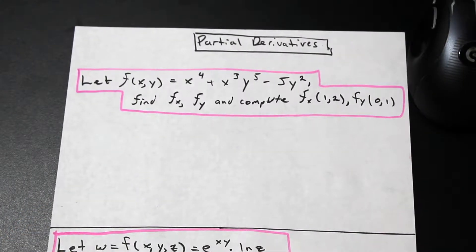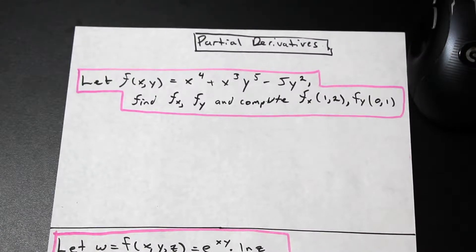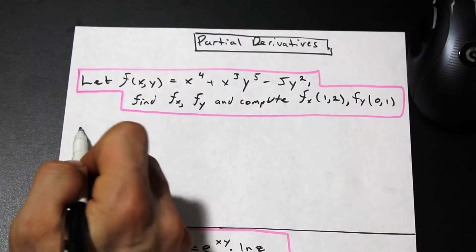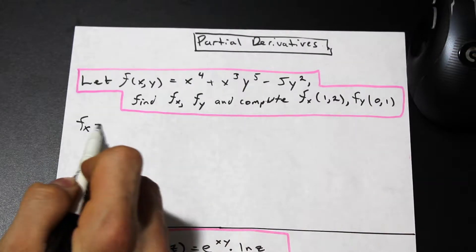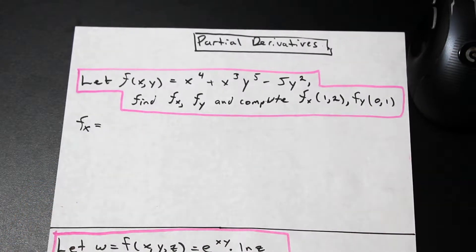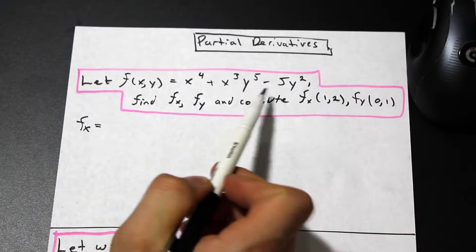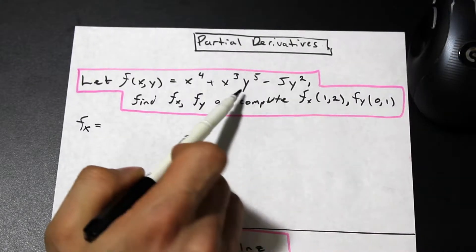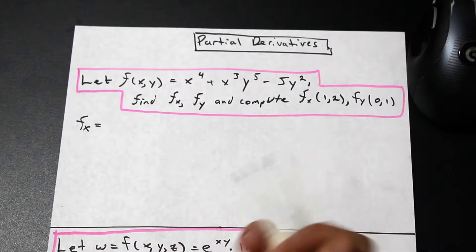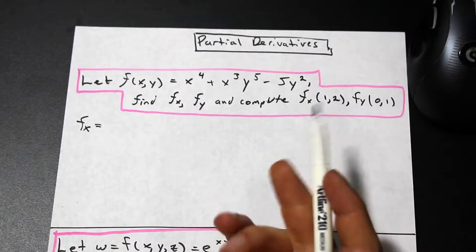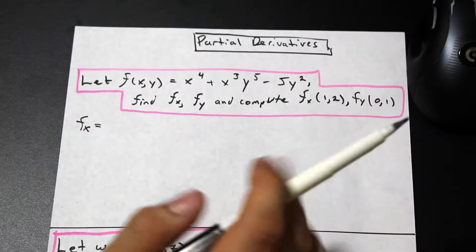By this point you should know how to take a derivative generally, and this is exactly the same thing — except when we take the partial derivative of f with respect to x, we consider x as the only variable. Every other variable in the equation is considered to be a constant — you just treat it as if it were a number.